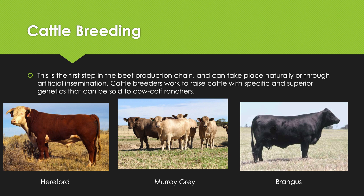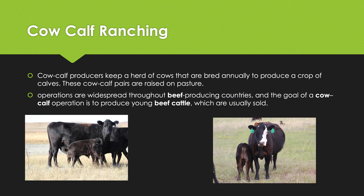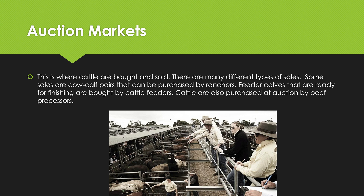Cow-calf producers keep a herd of cows that are bred annually to produce a crop of calves. These cow-calf pairs are raised on pasture; operations are widespread throughout beef-producing countries. The goal of a cow-calf operation is to produce young beef cattle which are then usually sold. You might have a cow-calf producer who just constantly produces young beef cattle and then sells them on to other people.